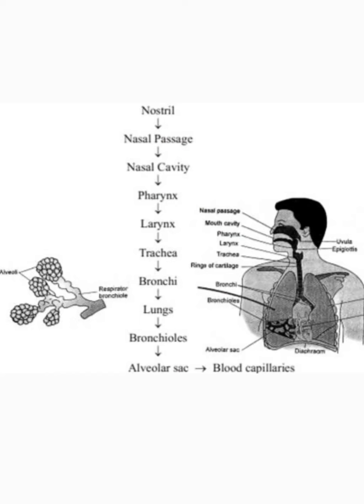Let us learn about the pathway of respiration. From the picture, you can clearly understand that the pathway of respiration involves nostrils, nasal cavity, pharynx, larynx, trachea, bronchi, bronchioles, alveolar sac and blood capillaries. Let us learn in detail about each one of them.